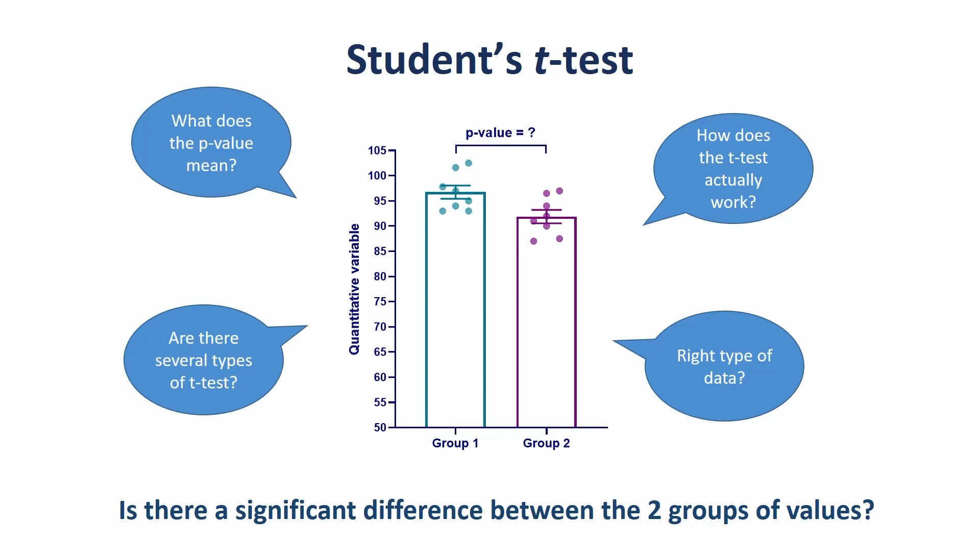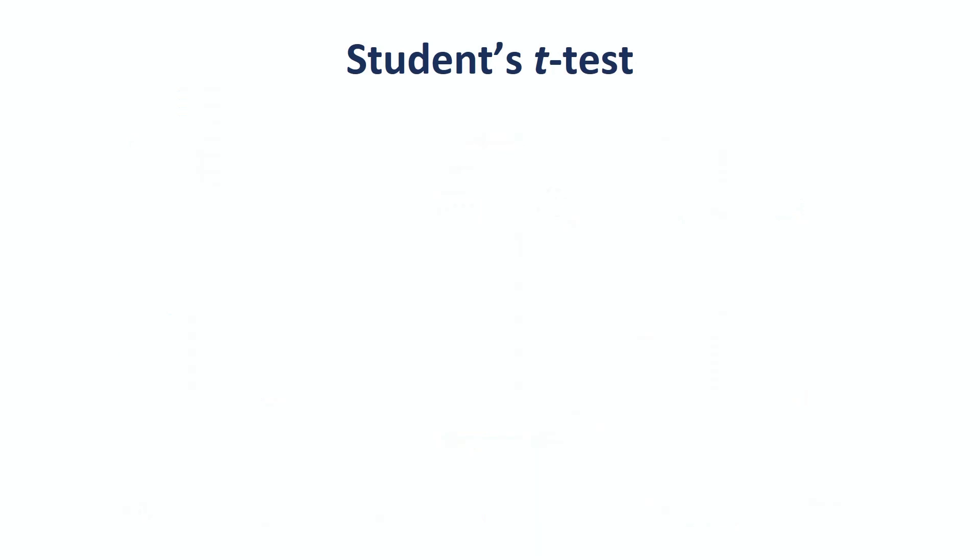The t-test is a super friendly test which compares two groups of values. Now, we are not talking about any values. First, the t-test actually compares the means of the two groups of values, so our data needs to be quantitative. Second, we are not talking about any quantitative data. We want ours to be well-behaved, or more specifically, we want them to meet certain assumptions.